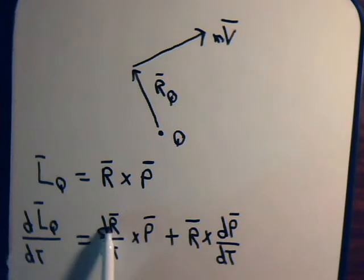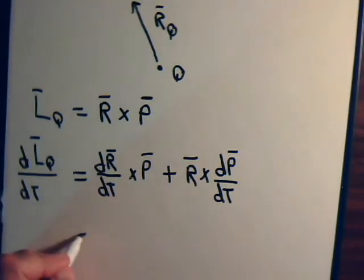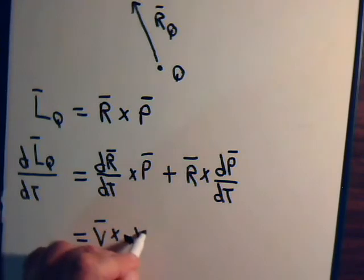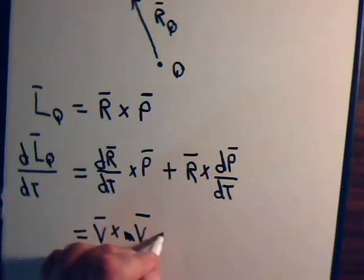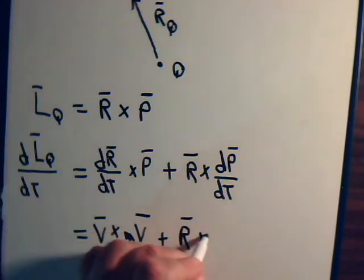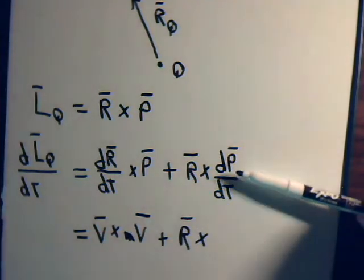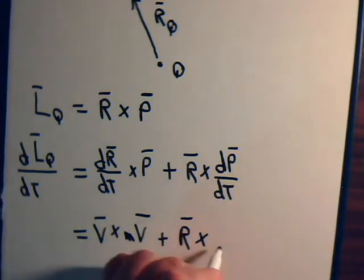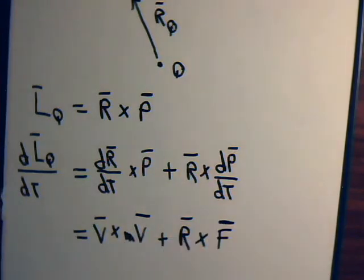But dR/dt, the rate of change of the position vector, that is the linear velocity of the particle. So we can write it as V cross the momentum, which is mV, plus R, and the derivative of momentum with respect to time, that of course is the force. This cross product is zero because we have velocity cross velocity. The angle between them is zero and the sine of zero is zero. And this is the torque.